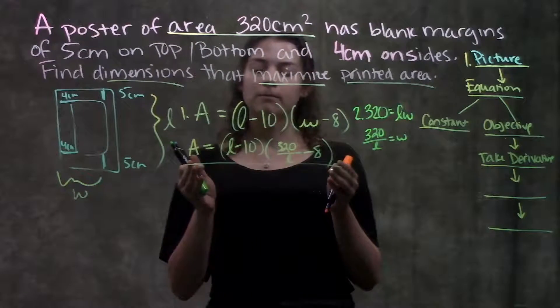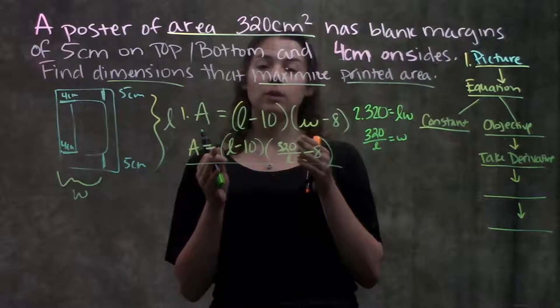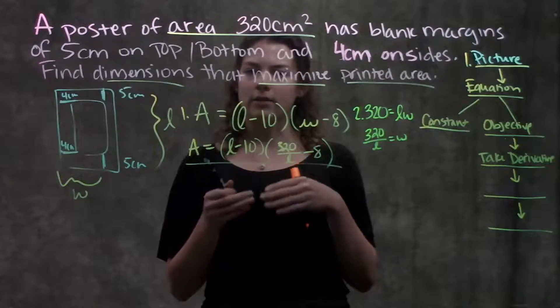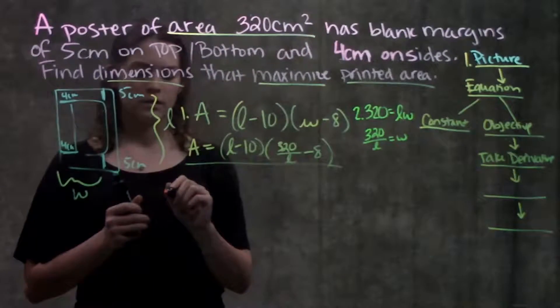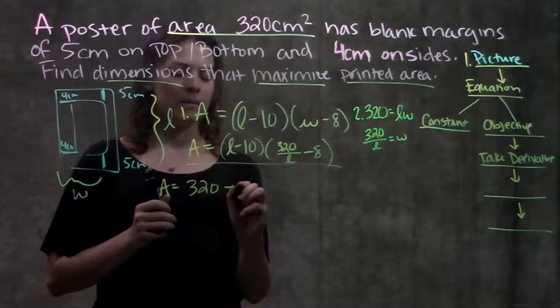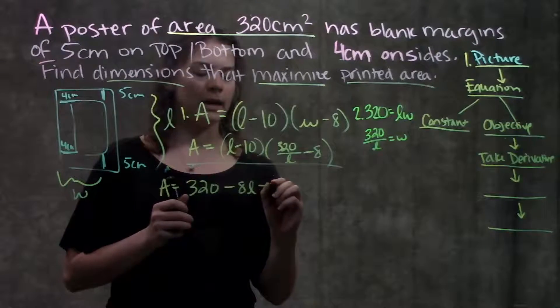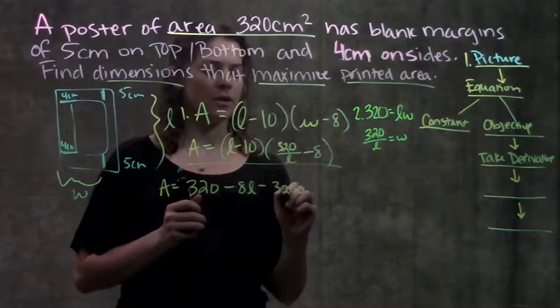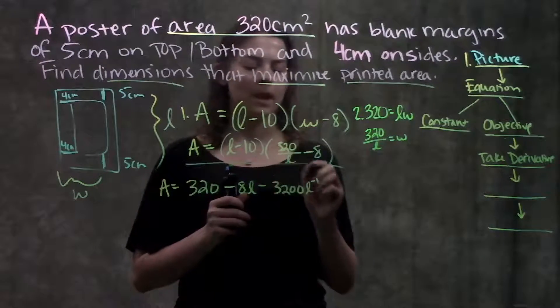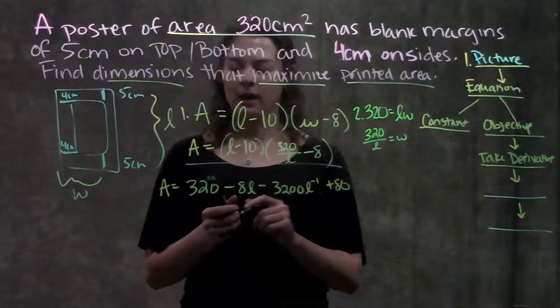Okay, so we have our objective equation. We've written in terms of only one variable. Before we take the derivative, let's multiply this out to make our math a little bit easier. So when I multiply this out, I need to FOIL it. So I get 320 minus 8L minus 3200, I'm going to move this L to the top, L to the minus 1 plus 80.